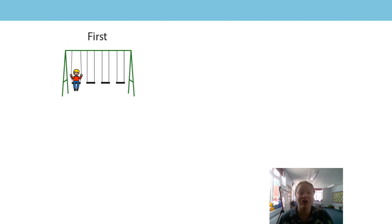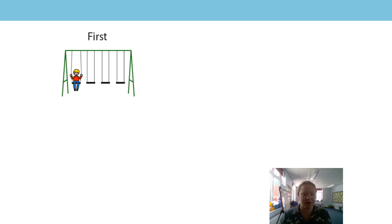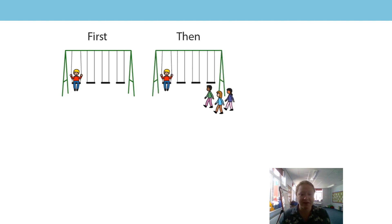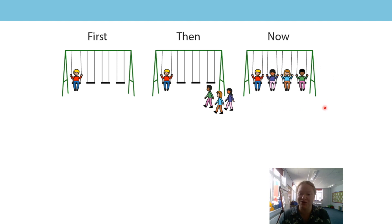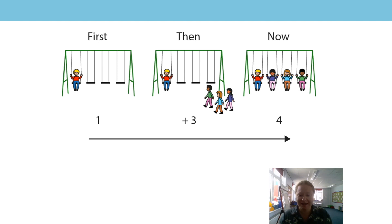So today we're going to carry on looking at addition, but we're going to do it slightly differently. We're going to think of it as a story instead of putting two groups together. We're going to start with a number and look at our story through the numbers. Tell me what you see on the screen first. We've got one child on the swings. First there was one child on the swings. Then three more children came along. Now there are four children on the swings. So our story goes in that direction. We've got one; first there was one. Then we added three. Now we have four. Here is our equation: one plus three is equal to four.